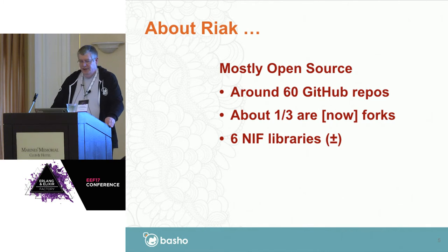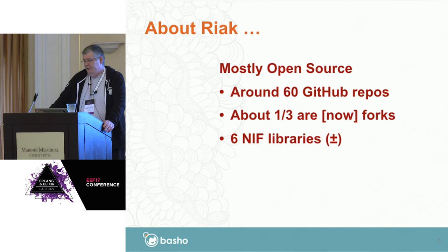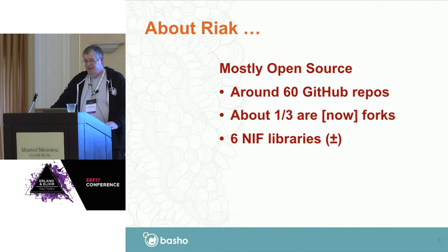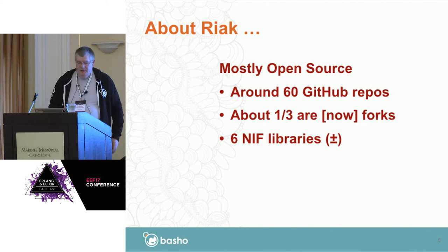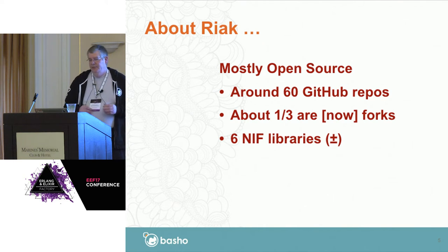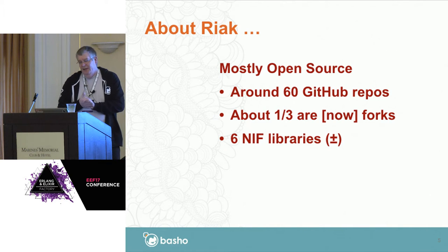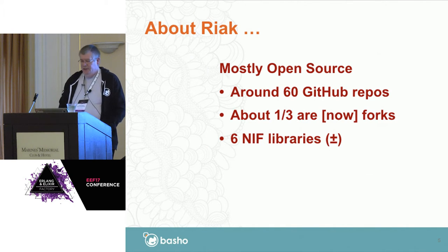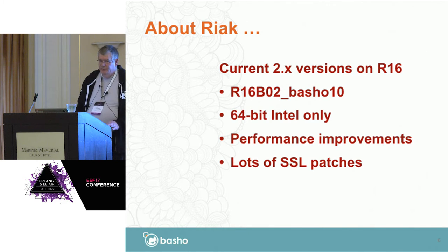Getting into what goes into Riak — it's mostly open source. We have an open source version and an enterprise version with some additional features for paying customers. Most of what I'm talking about relates to the open source. It's comprised of, depending on how you count, around 60 GitHub repos. Roughly a third of them are now forks — they weren't always. And there are, depending on configuration, roughly half a dozen NIF libraries implemented in C and in a couple of cases C++, and a couple of those are pretty substantial.